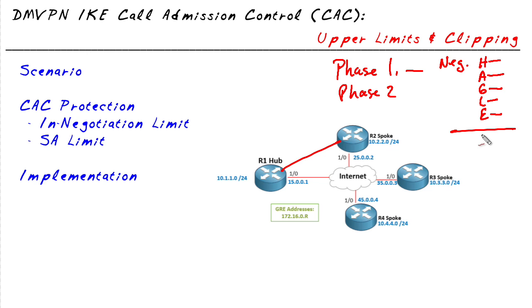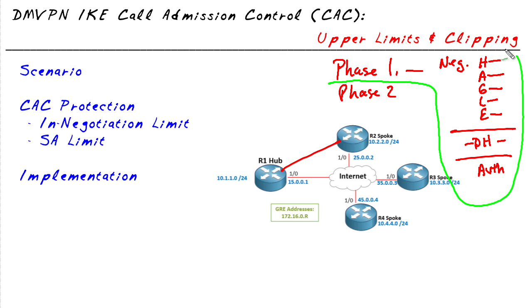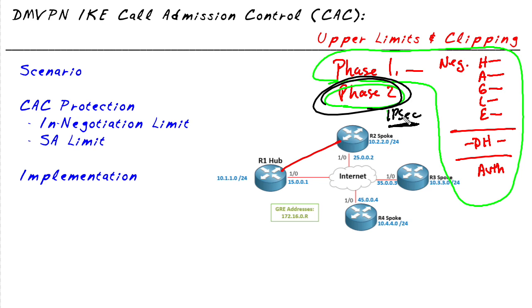If the negotiations are successful, the second step is to run the Diffie-Hellman that they agreed to during the negotiation process. The Diffie-Hellman algorithm allows the two devices to establish shared secret keying material that they can use with symmetrical algorithms like AES. After Diffie-Hellman is done, the two devices authenticate with each other using the authentication method they agreed to in the first step. All of that is part of IKE Phase 1, and if successful, it can move on to IKE Phase 2, where we actually set up the IPsec security associations that carry transit traffic.